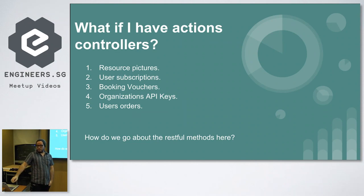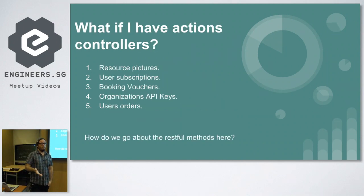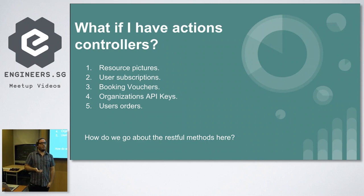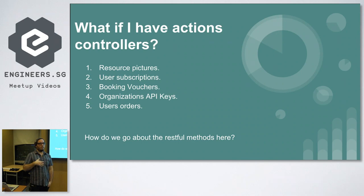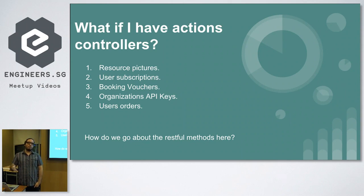If we go back to our previous slide about abiding to the seven principles of controllers — for example, if you have a user that needs to subscribe to your system, you can create a user subscription controller. With this user subscription controller, you can pretty much abide to these seven methods, and then you come back to the same principle: I'm going to design my code in the same way as my API is working. In this way, you can keep controllers clean and design your code towards your domain.